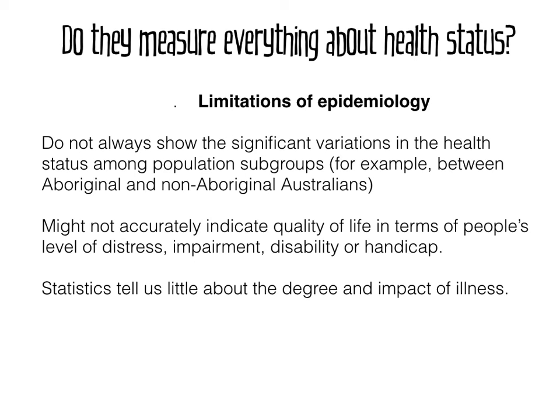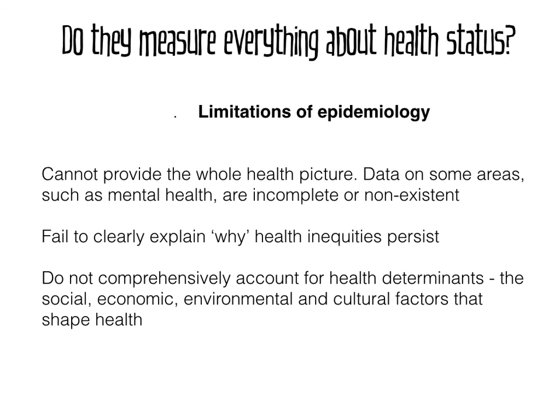Statistics tell us little about the degree and impact of an illness on a person's life. Furthermore, epidemiology cannot provide the whole health picture — data on some areas, such as mental health, are incomplete or non-existent, mainly because people don't always provide open and transparent information about their mental health, making some statistics unreliable. Epidemiology can also fail to clearly explain why health inequities persist — it may identify them but not explain why they exist, which is critically important.